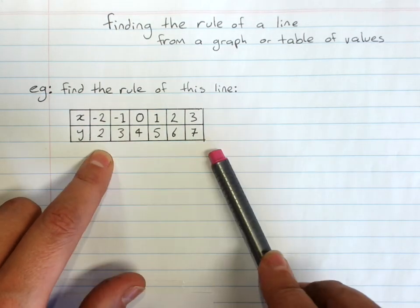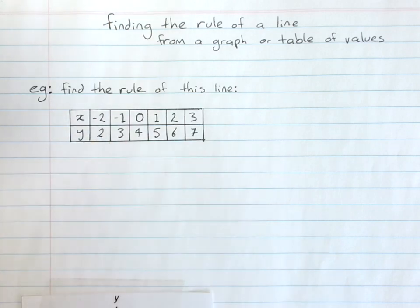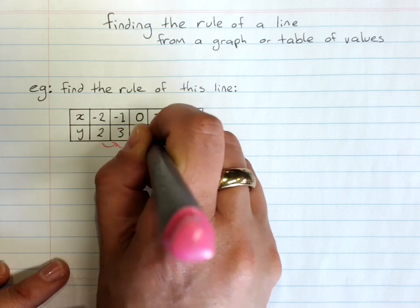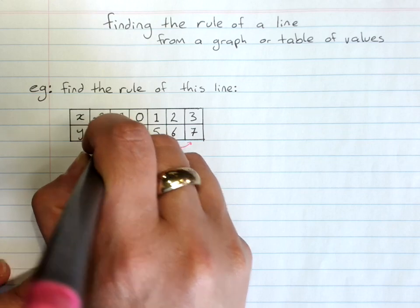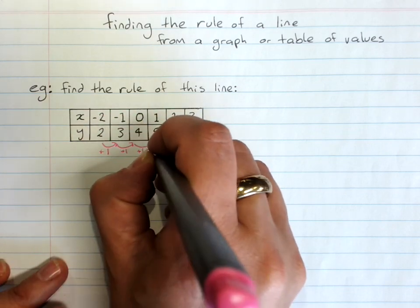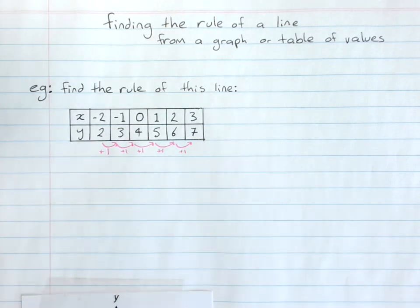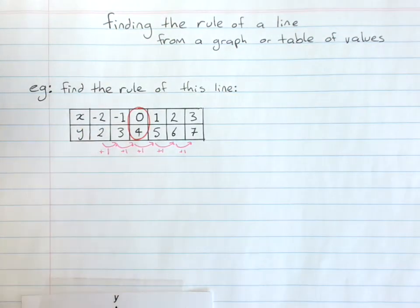You remember that when we do a check with a table of values when I've got a rule, there's two things I check. I check what's the pattern in the y values. I'm going up by one every time. So that's the first thing I check. And the second thing I check is when x is zero, what's y?